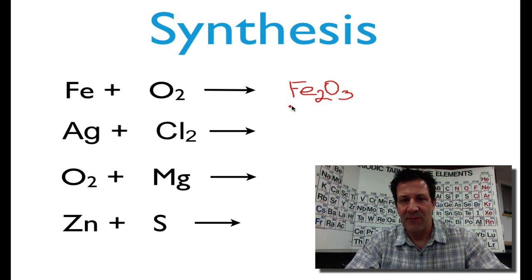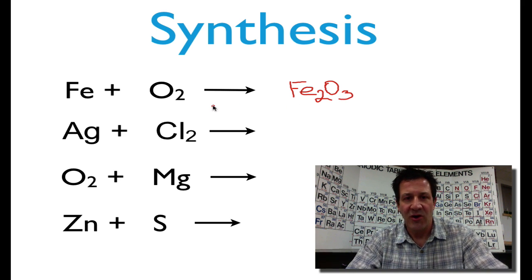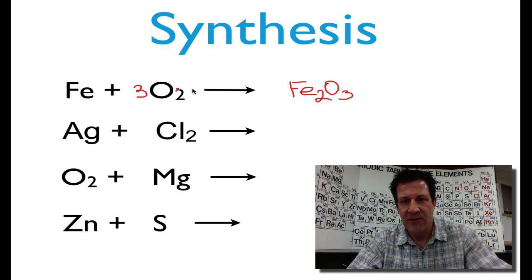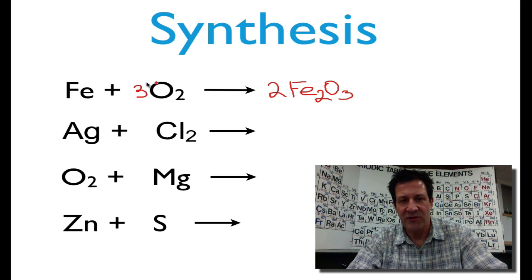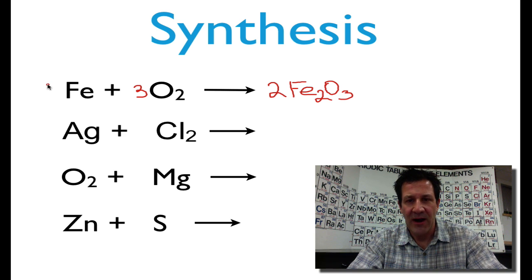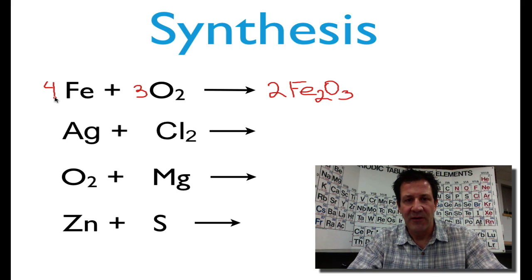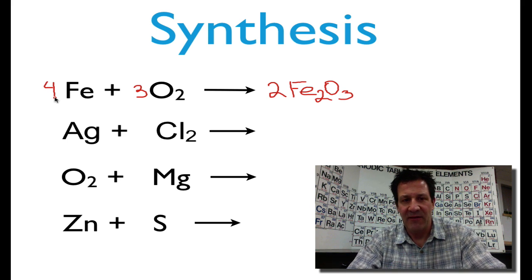Now let's balance that chemical equation. We have two oxygens on the left and three on the right-hand side, so we're going to put a three here and a two here — that gives us six oxygens on each side. Then we have four irons, so we put a four in front of the iron. That equation is balanced.